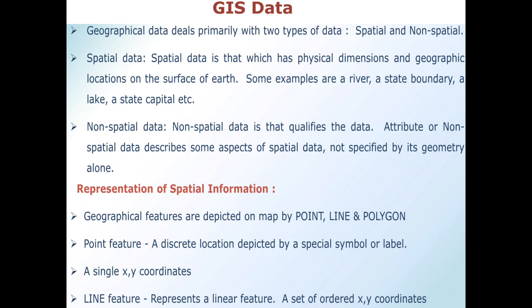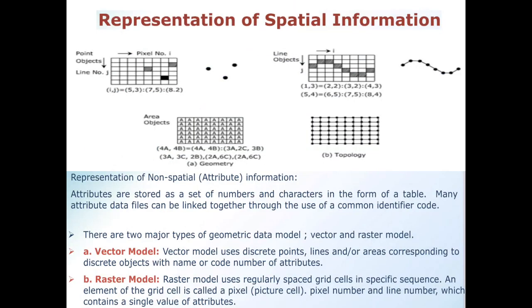A point feature indicates a discrete location by a spatial symbol or label. It is a single x, y coordinate. A line feature is a feature used to represent a line or a set of ordered x, y coordinates. The line feature connects point features.